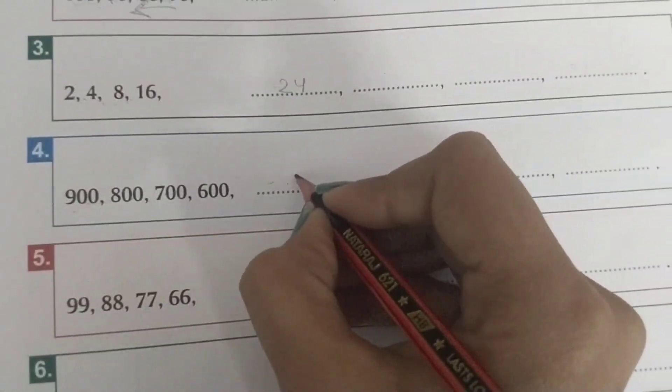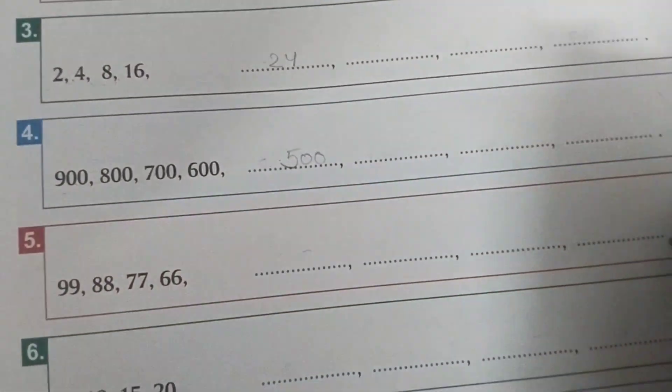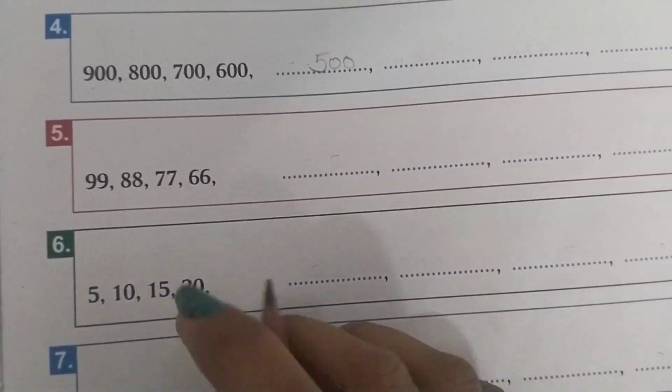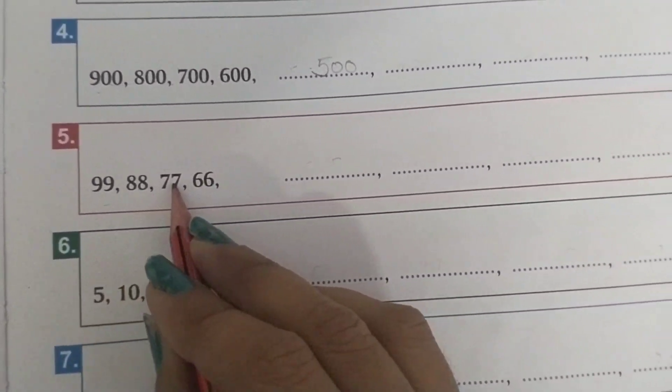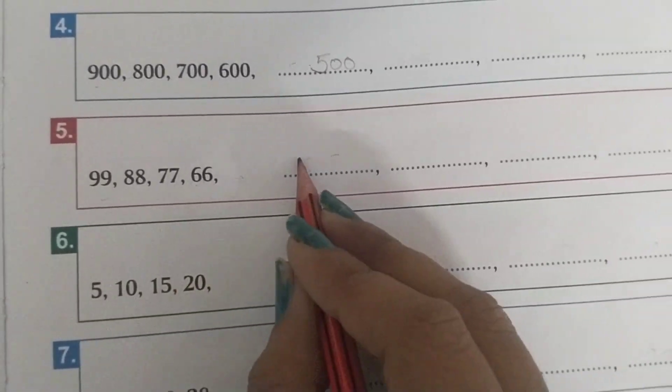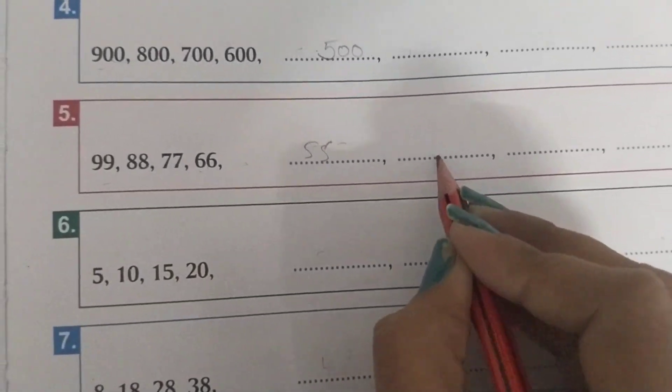Next we have 99, 88, 77. Decreasing order. 66, 55, 44, so on.